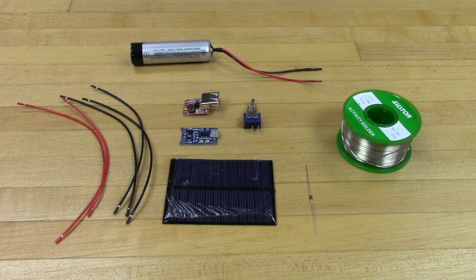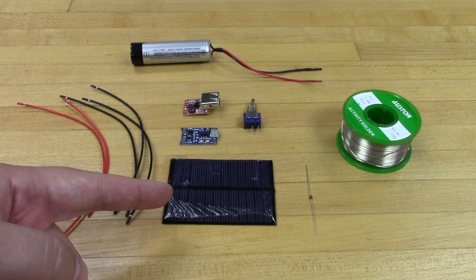Before we build our charger, let's just double check we have all the parts that we need. You'll be needing 5 wires, 4 inches in length each, 3 black and 2 red,